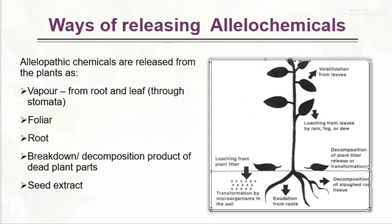Ways of releasing allelopathic chemicals. Allelochemicals are released from plants by different ways: first, as vapor from root to leaf through stomata; second, foliar leaching; then root exudation; and breakdown decomposition products of dead plant parts and seed extracts.